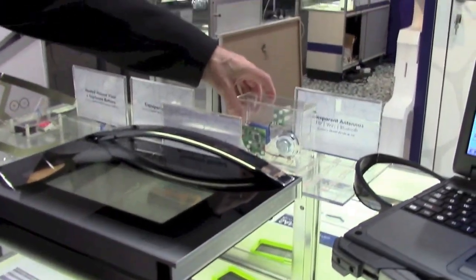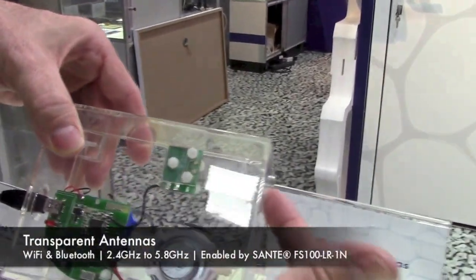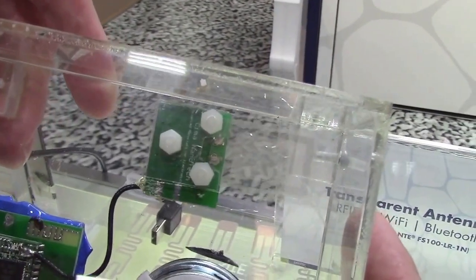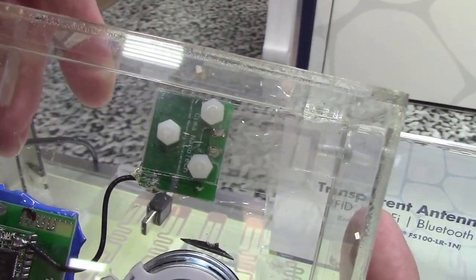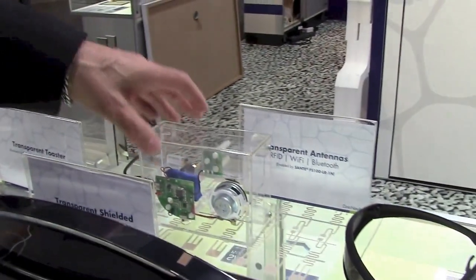Also, the low resistance film is great for use for antennas. So it's a little difficult to see, but it's transparent. An antenna that's built from our FS100LR film, and this is usable in the Bluetooth and Wi-Fi frequency bands.